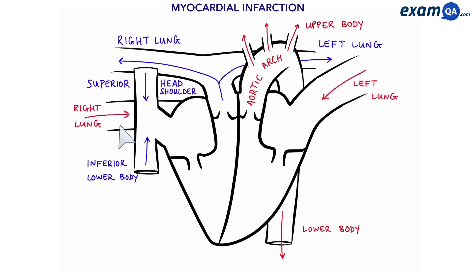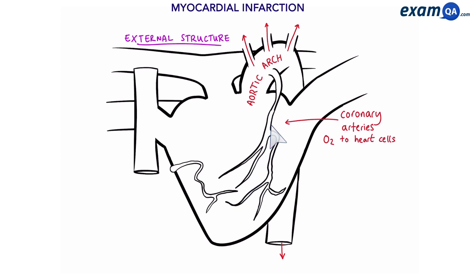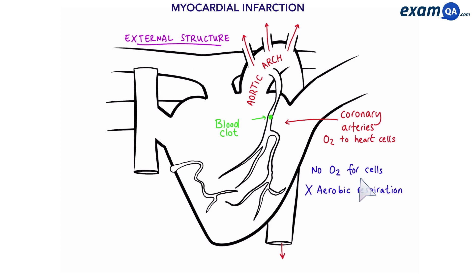Now let's look at the external structure. The main feature is a small vessel called the coronary artery, which carries oxygen to the heart cells. Sometimes the coronary arteries can get blocked, meaning there is no oxygen for the heart cells, so they cannot do aerobic respiration. Instead, they undergo anaerobic respiration and as a result the cells will die. This is a heart attack, also known as a myocardial infarction.